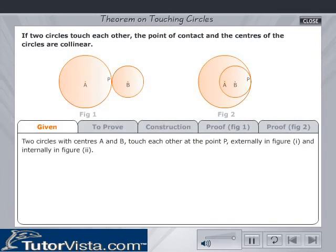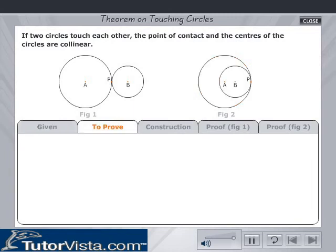Given: two circles with centres A and B touch each other at the point P, externally in figure 1 and internally in figure 2. To prove: